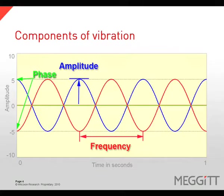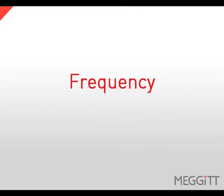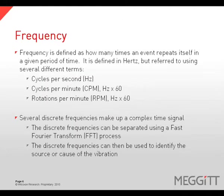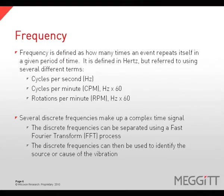Vibration can be characterized using three specific components: frequency, amplitude, and phase. Frequency is defined as how many times an event repeats itself in a given period of time. It is defined in cycles per second or hertz, but is also commonly referred to in cycles per minute or rotations per minute. A complex time signal is made up of several discrete frequencies, which can be separated using a fast Fourier transform or FFT process and then used to identify the cause of the vibration.